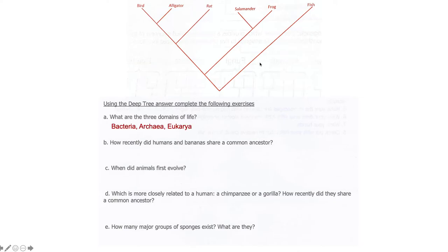So three branches of life, bacteria, archaea, and eukarya. 1.4 billion years ago was how recently the humans and bananas shared a common ancestor. Animals evolved in Metazoa about 820 million years ago. Chimps are more closely related to humans, branching off at about 6 million years ago. And there are three major groups of sponges.